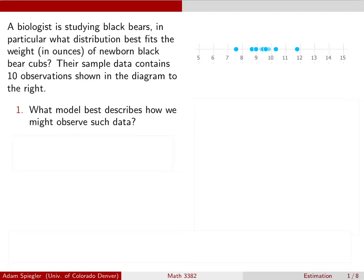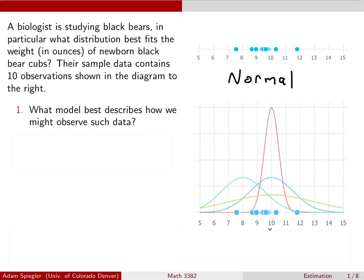In this case, I think we would have a pretty strong argument to say we should use a normal distribution to model this data. Okay, here's a bunch of normal distributions that we can overlay on top of our data. And so once we pick a model based on, say, the shape of the data, the next thing we would need to do is there are all kinds of different normal distributions. So which normal distribution fits that data best?